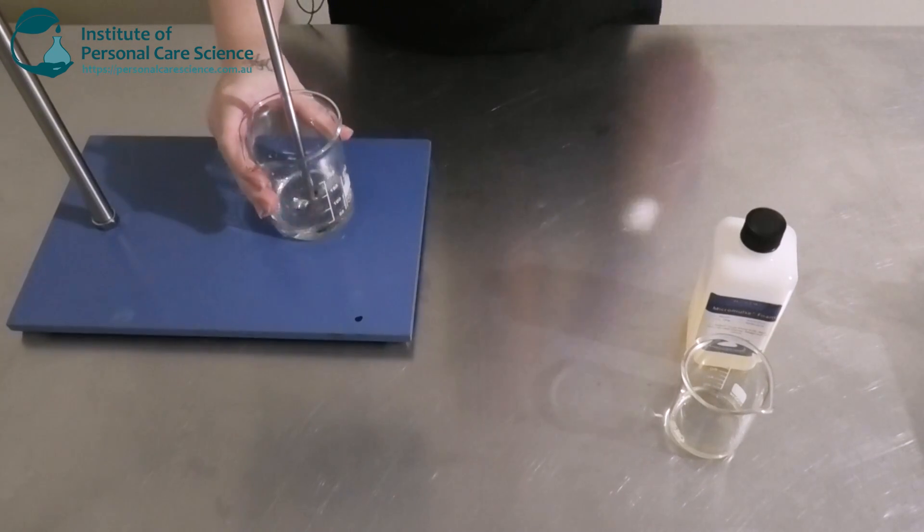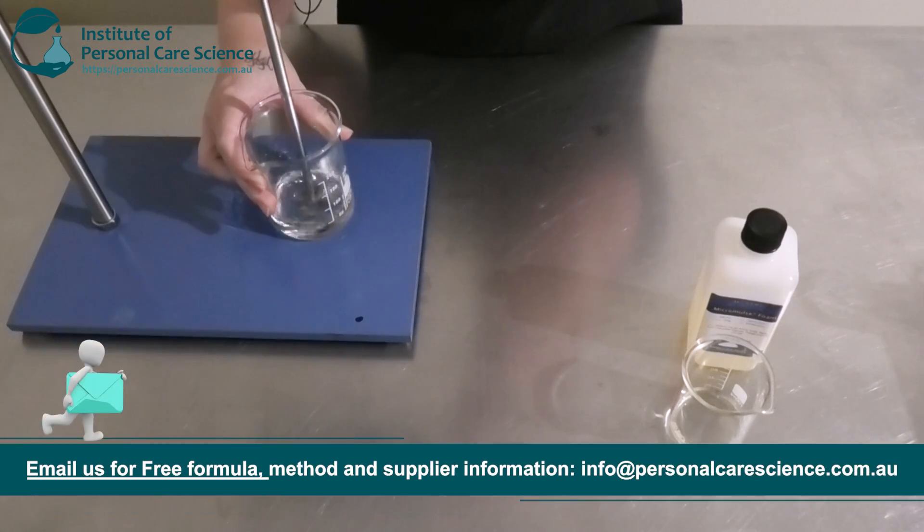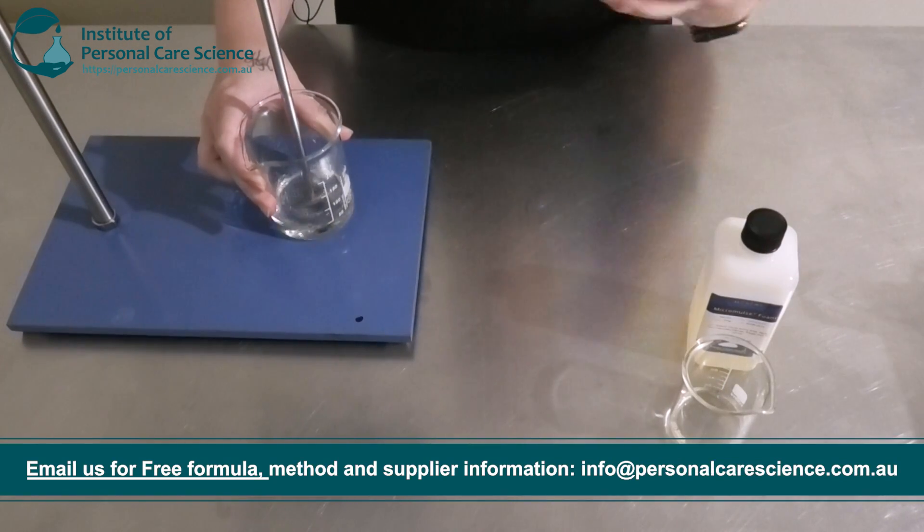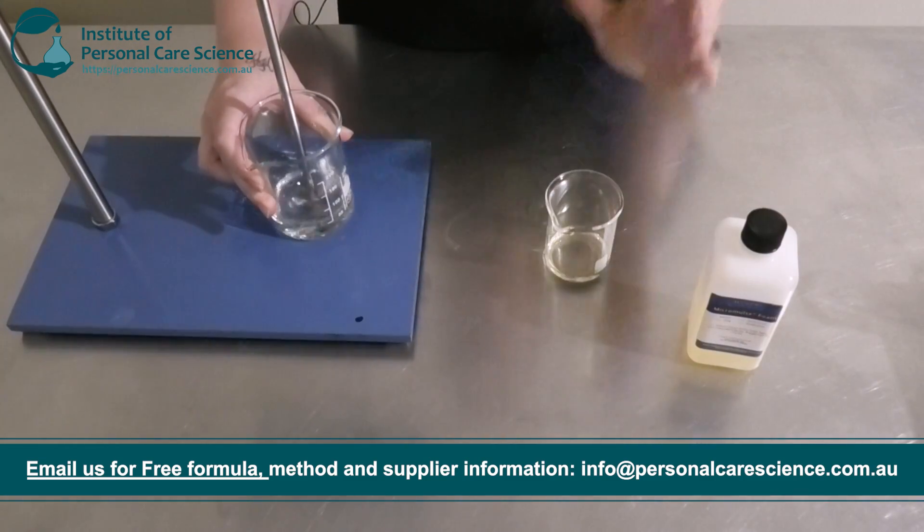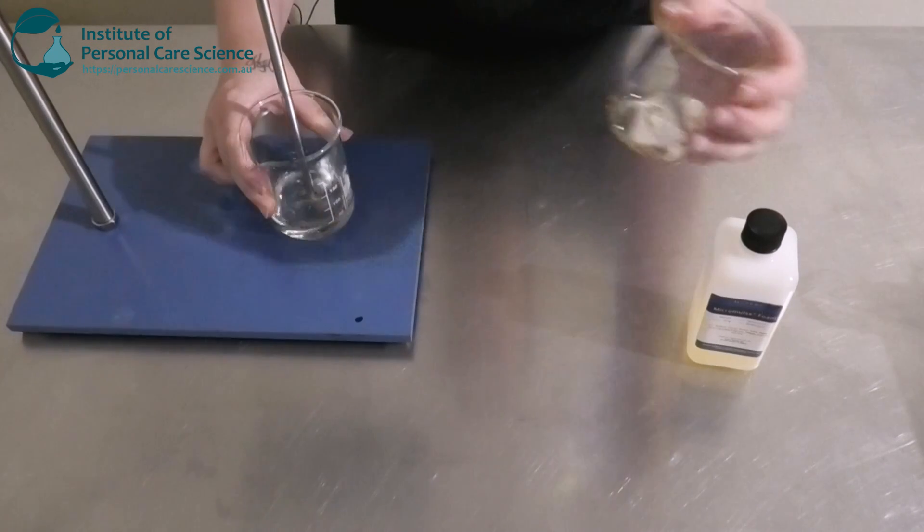I'm going to go ahead and start using my overhead mixer here to gently add in my Micromulse Foam. You don't want to have your RPM up too high because you don't want to cause a lot of foam. You also don't want to use high shear either. And it is recommended by the supplier to add it slowly. So I've just got it in a little beaker here. I'm just going to add it bit by bit.